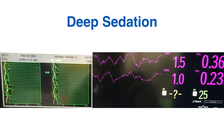To summarise depth of sedation: as sedation increases, the yellow SEF line and the peaks on the CSA trace move towards the left-hand side, as will the SEF values. If sedation is increased even further, you'll get burst suppression on the raw EEG, shown by breaks in the yellow SEF line.